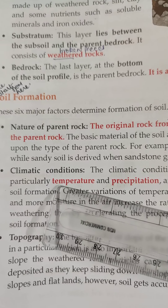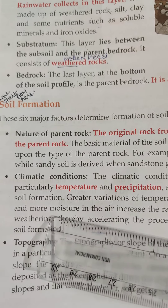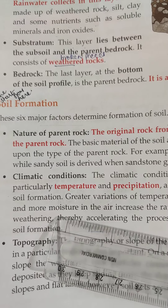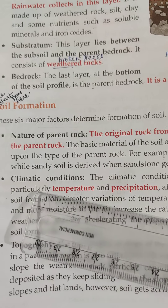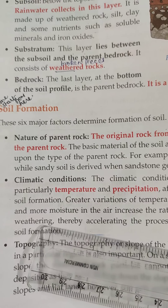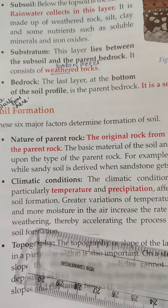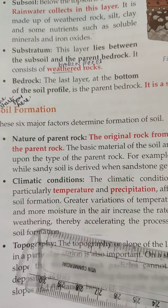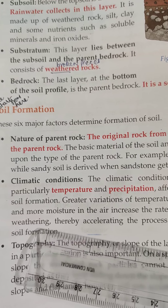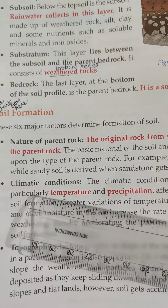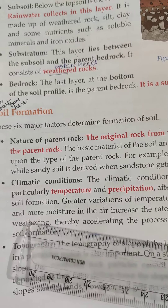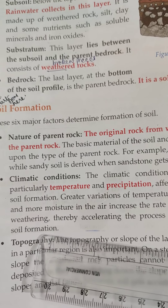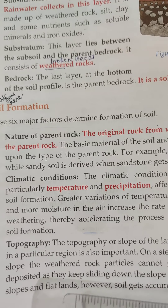The second factor is climatic conditions. The climatic conditions, particularly temperature and precipitation, also affect soil formation. Greater variation of temperature and more moisture in the air increase the rate of weathering, thereby increasing the rate of soil formation.